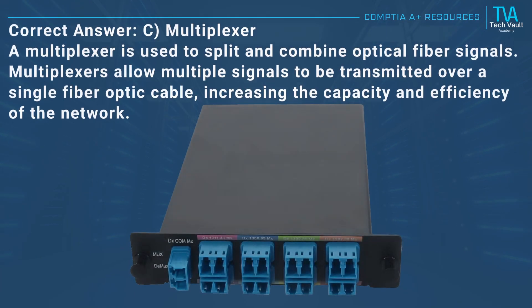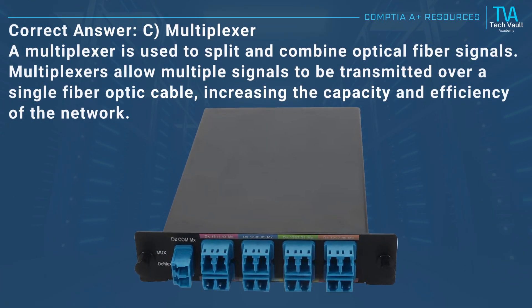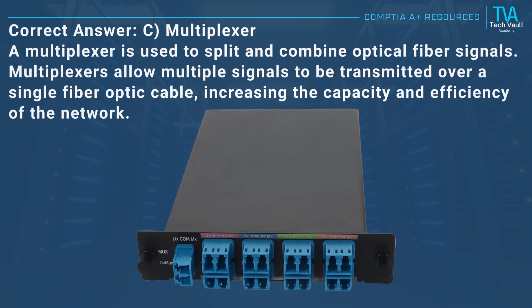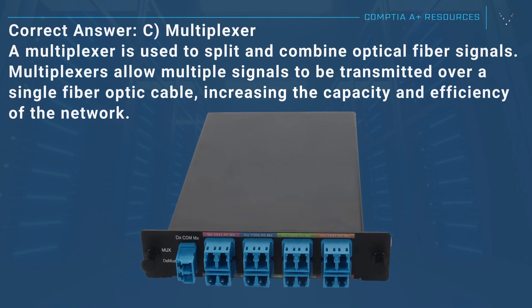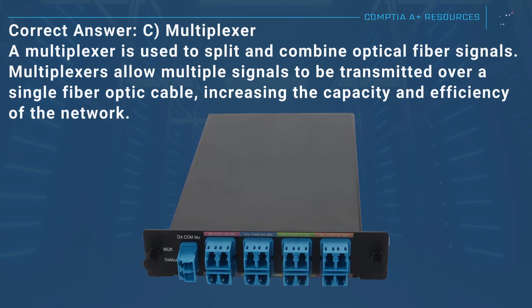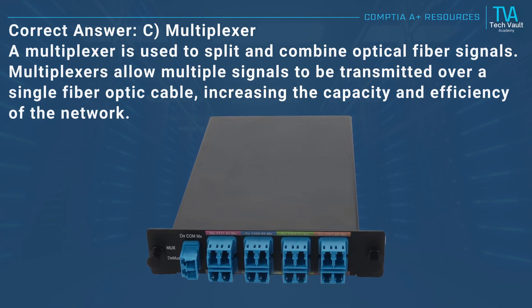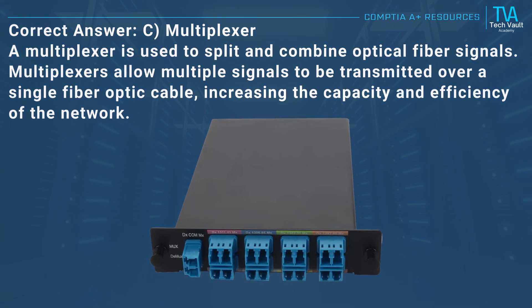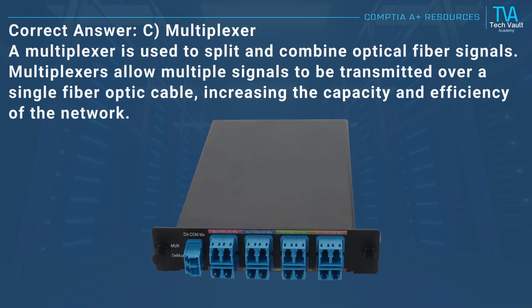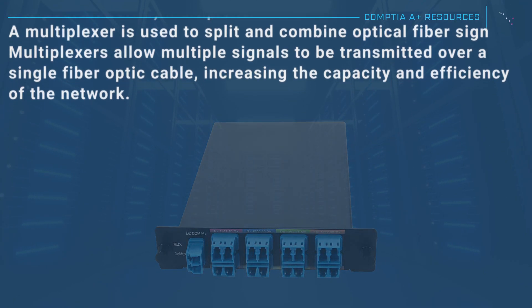Correct answer: C, multiplexer. A multiplexer is used to split and combine optical fiber signals. Multiplexers allow multiple signals to be transmitted over a single fiber optic cable, increasing the capacity and efficiency of the network.